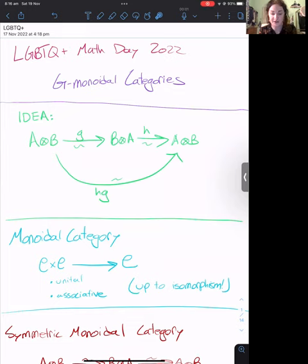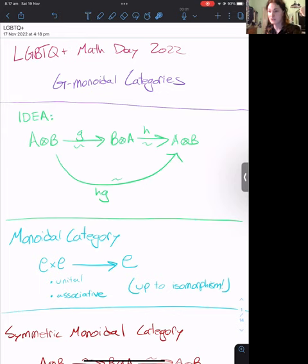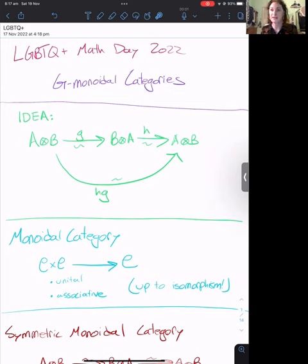The name of my talk is G-monoidal categories. My research is specifically in G-monoidal infinity categories, but I wanted this talk to be as accessible as possible to as wide an audience of mathematicians as possible, so I'm going to be focusing on the one-categorical setting. And then if there's time permitting at the end, I'll get into some infinity category stuff for those who are interested.